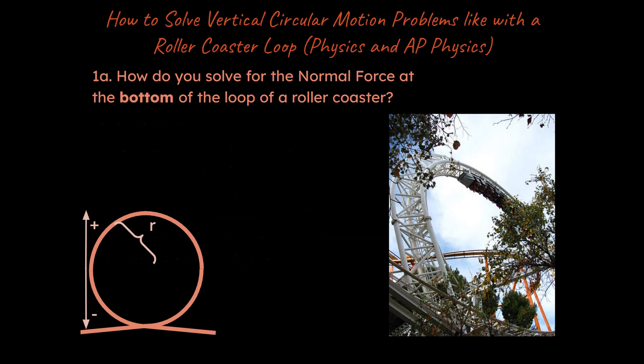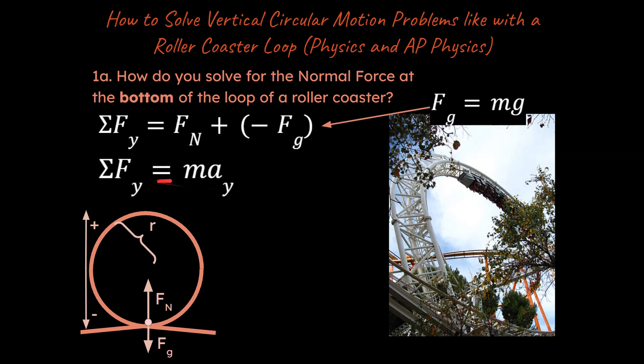So the very first question was how do you solve for the normal force at the bottom of the loop of the roller coaster? Here's a quick diagram. I'm going to assume up is positive, down is negative here. If we were going to draw a free body diagram in the y-axis and just think about what's happening in the y, you've got a force due to gravity and a normal force in the same plane. So I can go ahead and start with the sum of the force strategy up there.